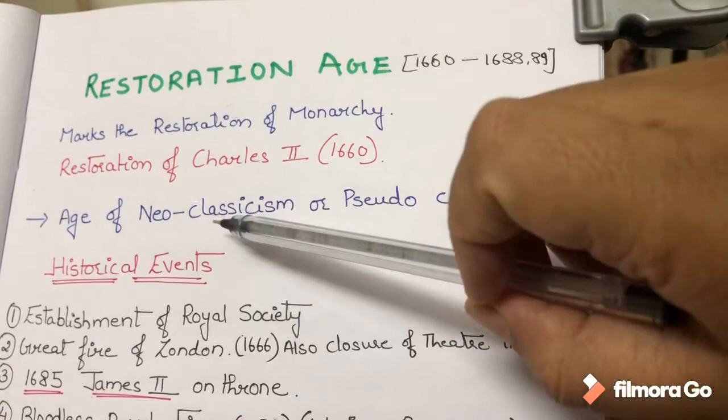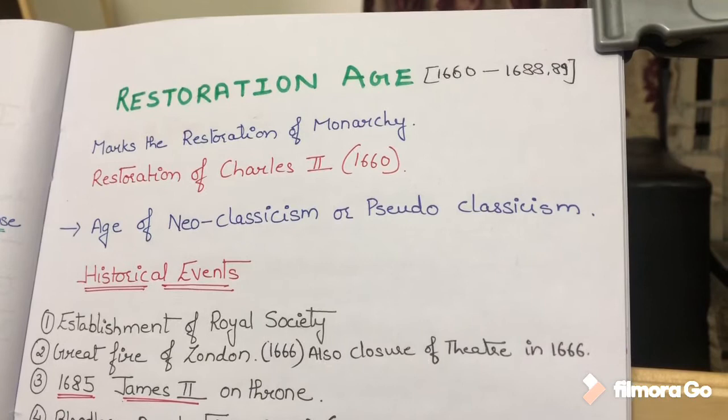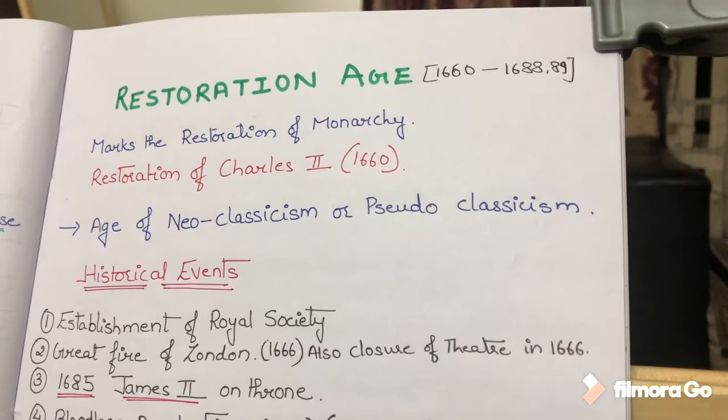This age is also known as the Age of Neoclassicism and Pseudo-classicism. Why? Because in this age, the writers were imitating classical texts — they changed them a little bit while imitating. That is why it is called Pseudo-classicism.